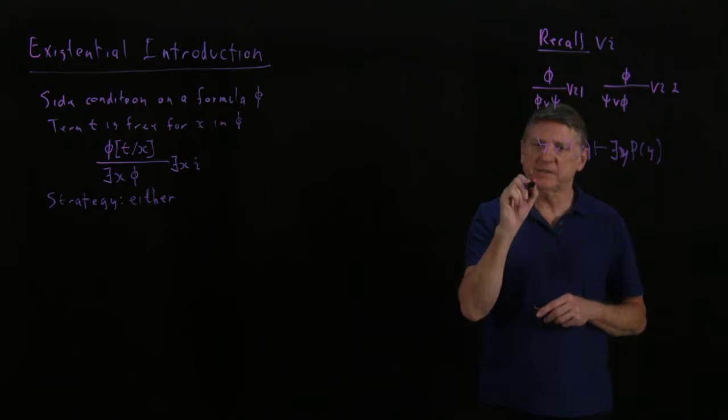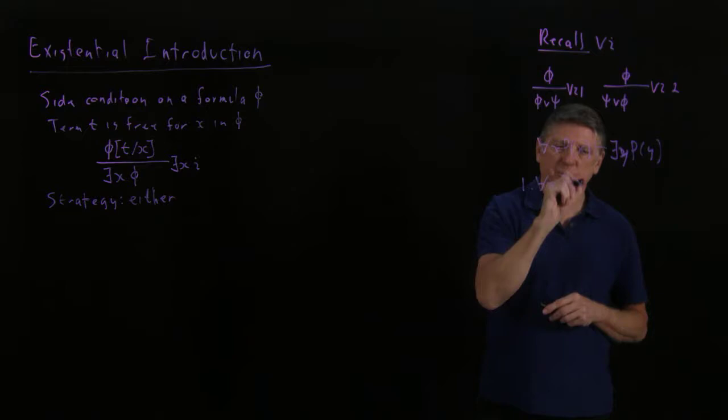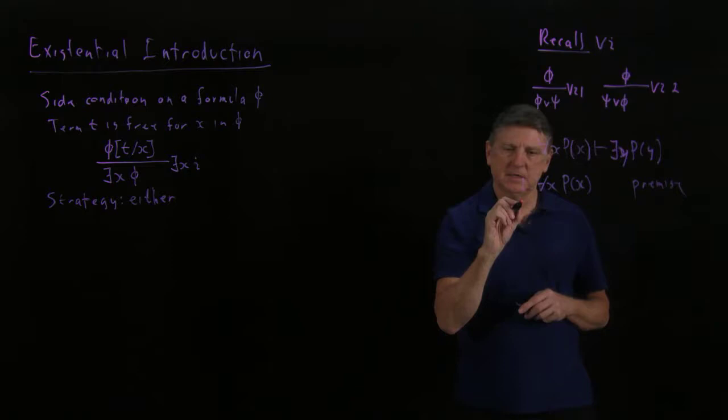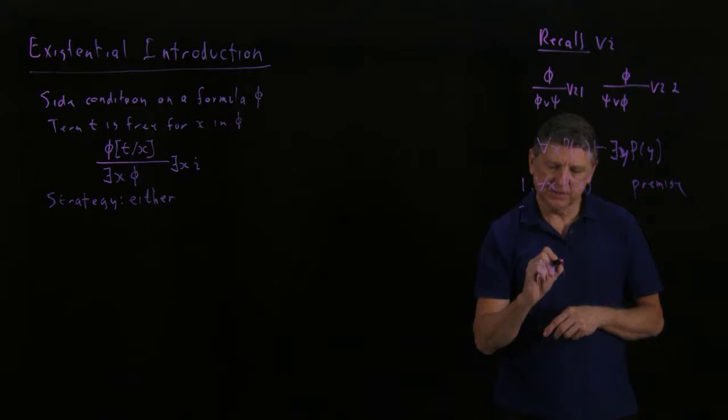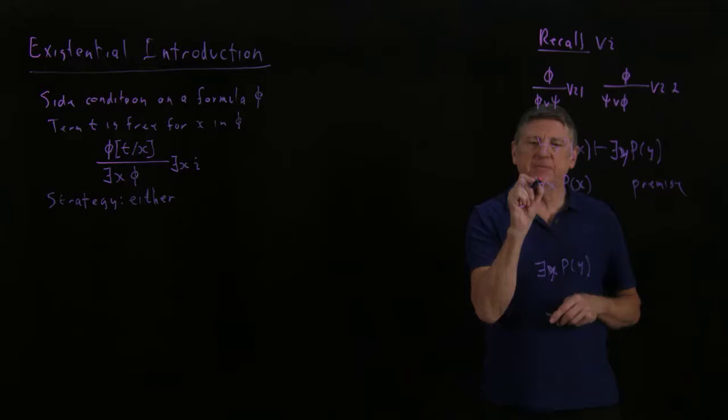So our proof would begin by stating our premise. So for all x, x has property p, so that's a premise. And then we have our conclusion, which is there exists a y such that y has that property.